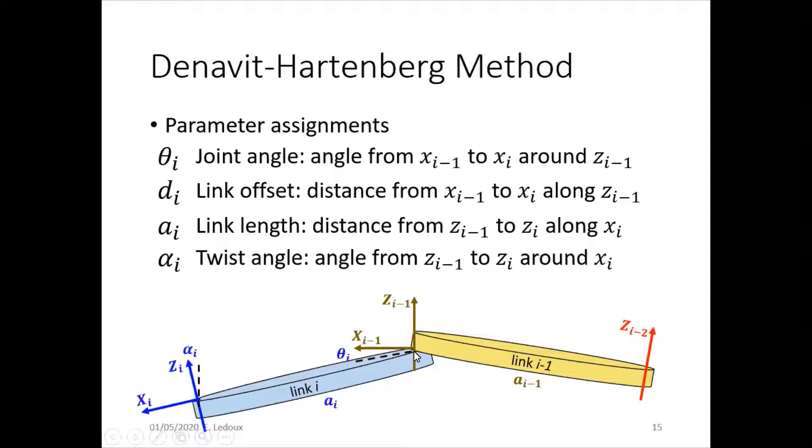The link length, a i, is the distance between the Z axes. So for link i-1, it is that distance from Z i-2 to Z i-1. For link i, it's going to be the length of that link from the Z axis of i to the Z axis of i-1.